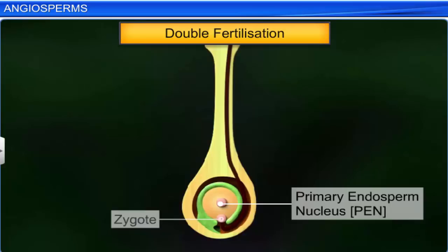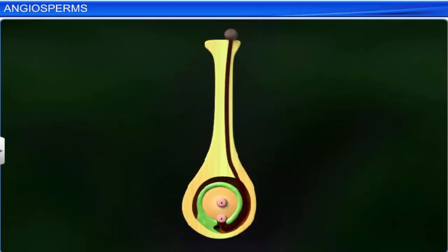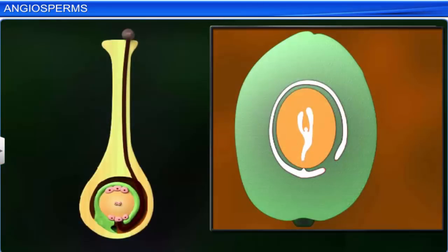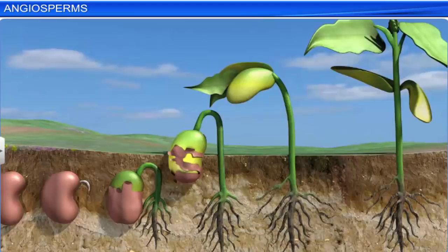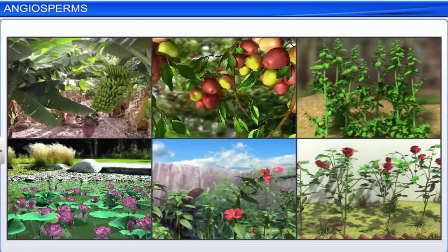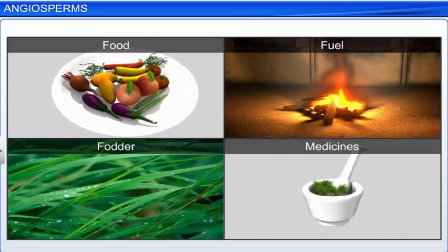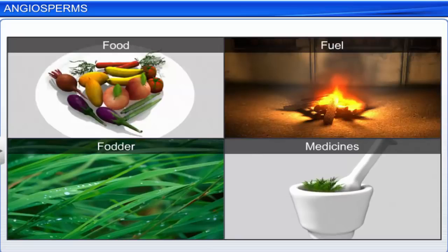After fertilization, the synergids and antipodals degenerate. On the other hand, the zygote develops into an embryo and the primary endosperm nucleus develops into an endosperm, which nourishes the zygote. Simultaneously, the ovule develops into a seed and the ovary into a fruit. The seed germinates and the embryo develops into a new plant. Angiosperms are one of the biggest plant groups and they grow in diverse habitats such as land and water, as well as in different climatic conditions. Besides being a source of food, they supply us with fuel, fodder, and medicines. Thus, angiosperms form an integral part of the ecosystem as well as of our daily lives.